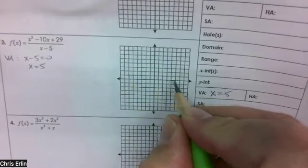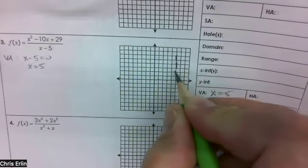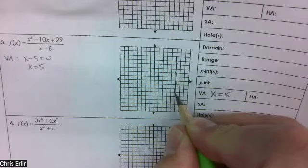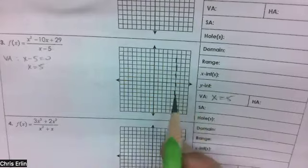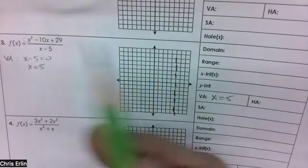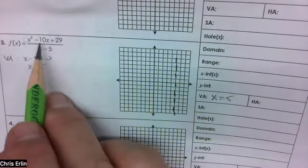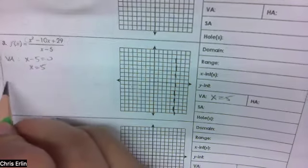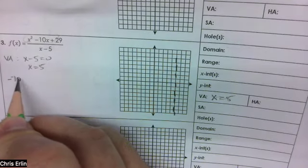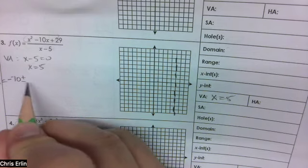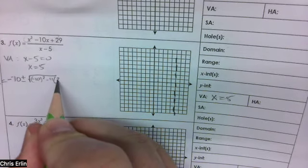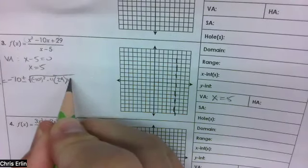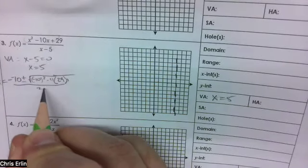One, two, three, four, five. Okay, now let's take a look at factoring this. We can't factor, but we can find the x-intercepts by doing the quadratic formula. So negative negative 10 plus or minus, this is x equals square root of negative 10 squared minus 4 times 29 times 1, all over 2 times 1.